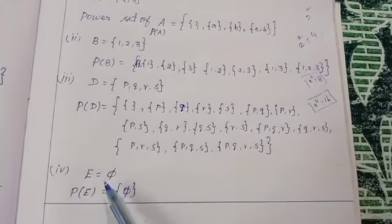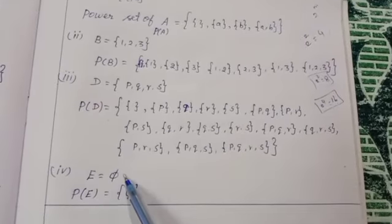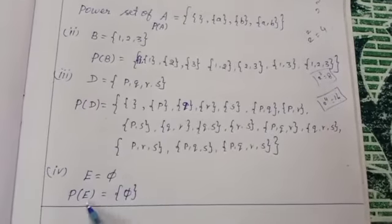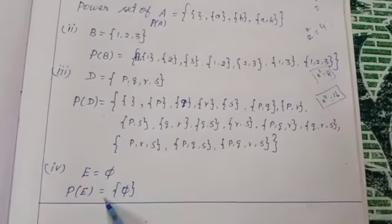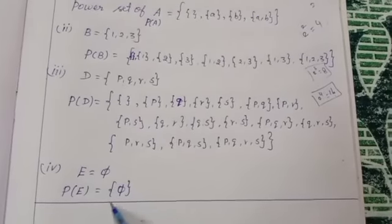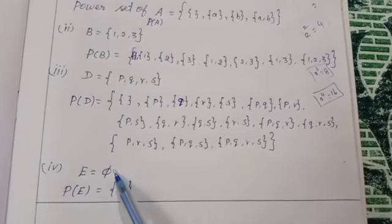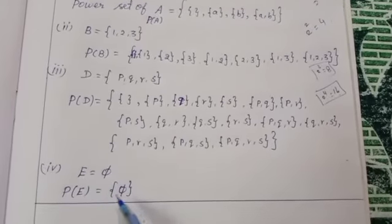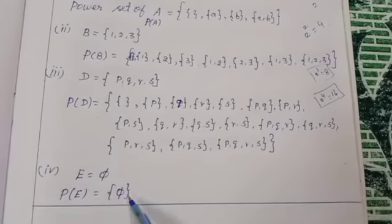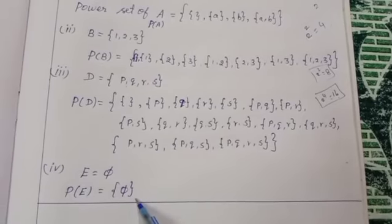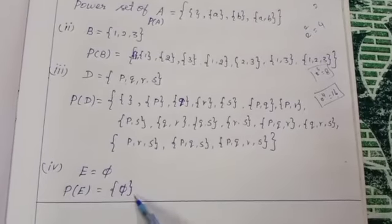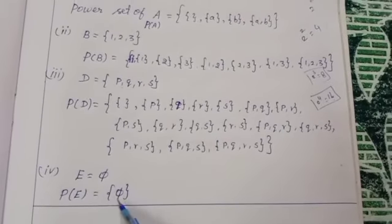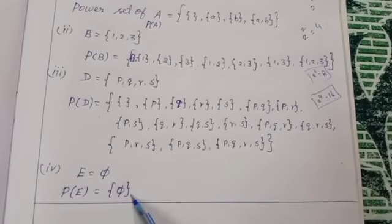Fourth question: E is equal to empty set. Power set P(E) is equal to the set of all subsets. Empty set is a subset of every set. So P(E) is equal to the set containing the empty set.